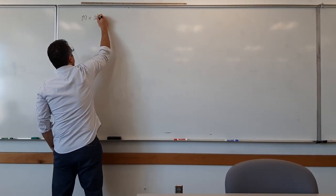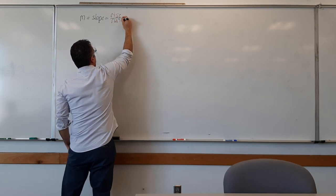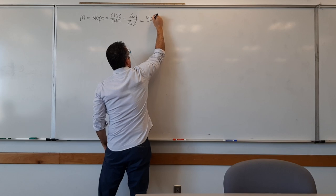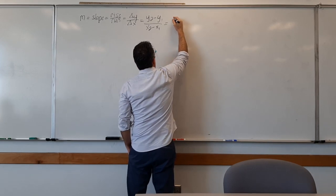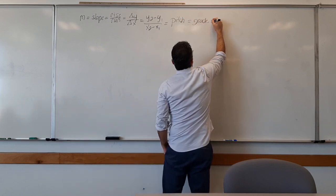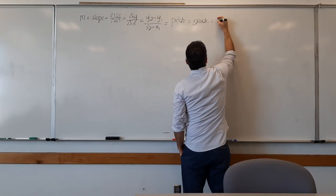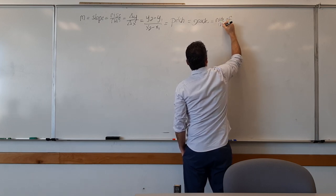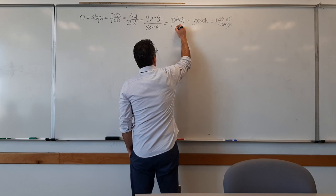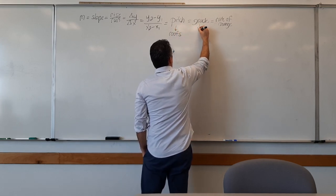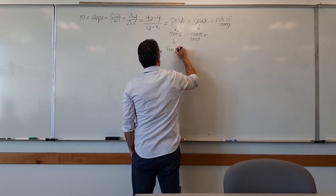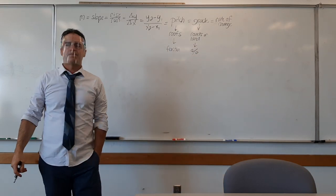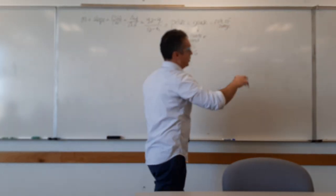Write down the following: m equals slope equals rise over run equals delta y over delta x equals y2 minus y1 over x2 minus x1. That also equals pitch, equals grade, and rate of change. Those are all the names of slope you need to know. Pitch always deals with roofs. Grade always deals with roads or land — pitch is always given as a fraction, and grade is always given as a percent. Make sure you have all that written.